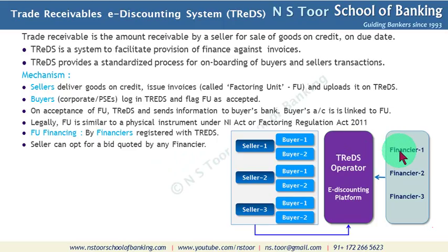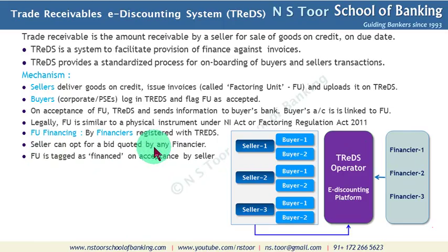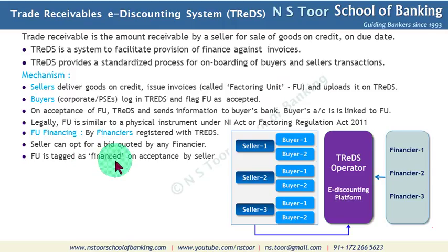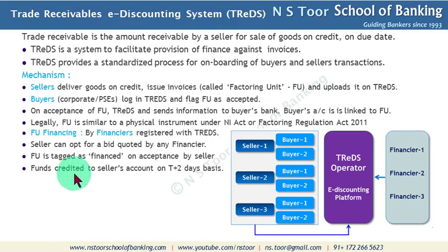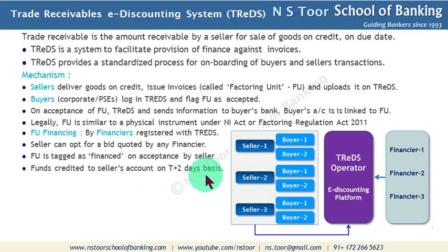Once the seller accepts and opts for a particular financier, the factoring unit is immediately tagged and marked as financed. Once it is marked as financed, the funds are credited to the seller's account on a T plus two working days basis.